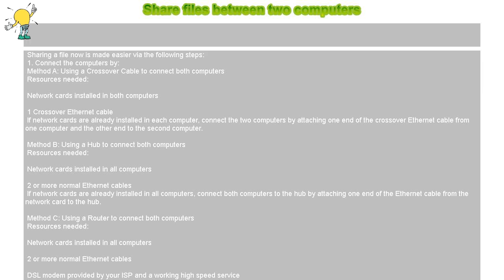Method B: Using a hub to connect both computers. Resources needed: network cards installed in all computers and two or more normal Ethernet cables. If network cards are already installed in all computers, connect both computers to the hub by attaching one end of the Ethernet cable from the network card to the hub.